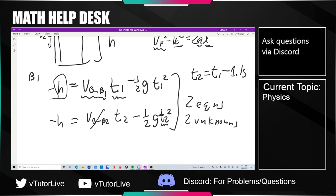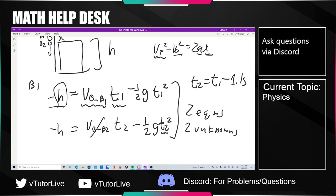Do you all agree? Very good. The question asks for what must be the initial speed if both are to hit the ground at the same time — that's just looking for the initial velocity of ball one. Choosing the right kinematic equation is more of an art than a science at this stage. More or less, look at what you know, look at your four kinematic equations, and try to get good alignment between the variables you're looking for and the variables you know.